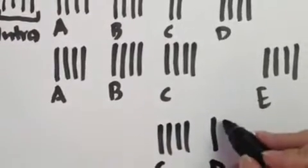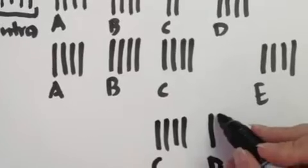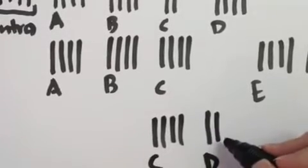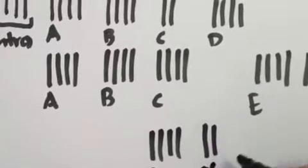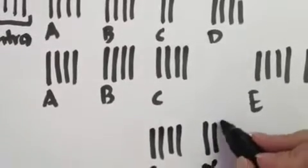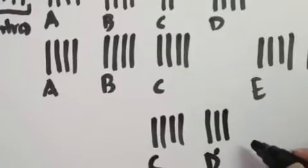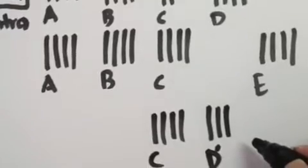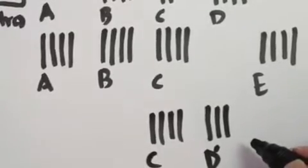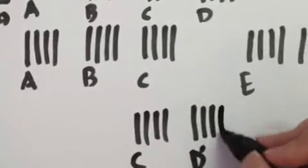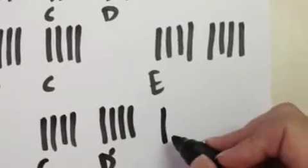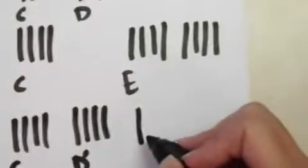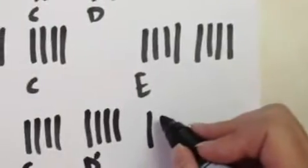Now we're in a part that sounds very much like D — it's not exactly D, so I could call it D-prime, but it's very close. I'm running out of room on my paper, so I'm going to call this part F, but I'll stick it under part D just because I ran out of room.